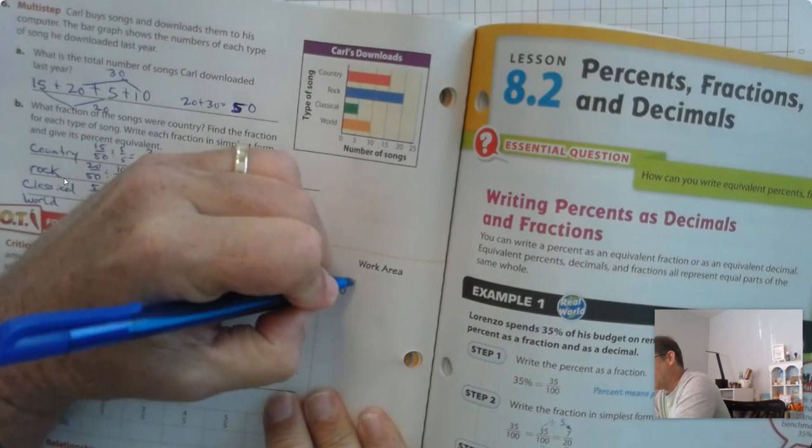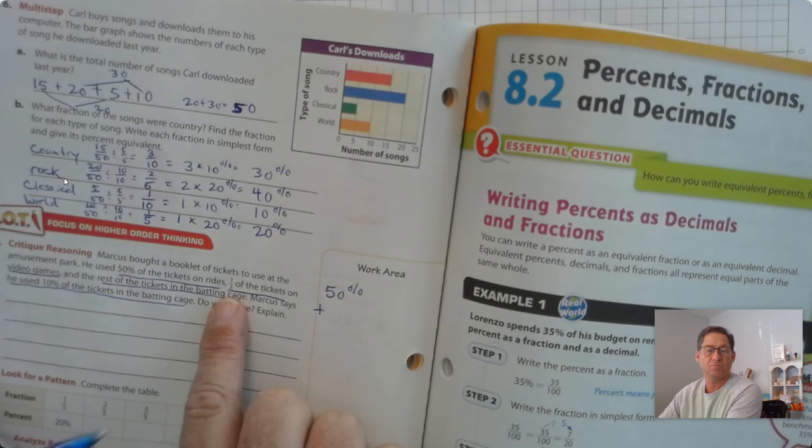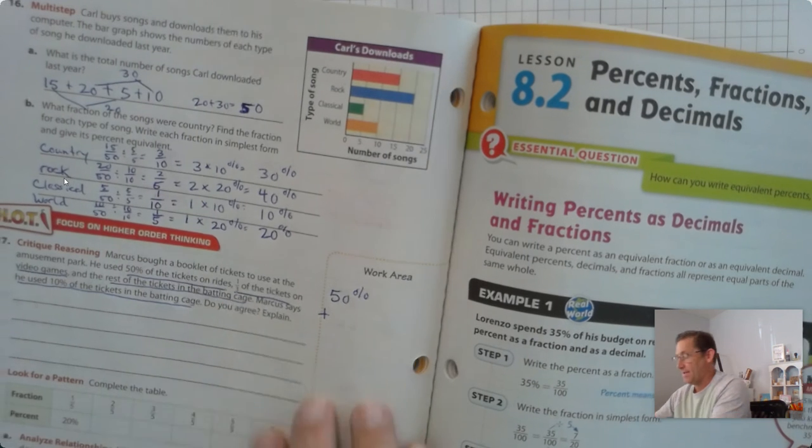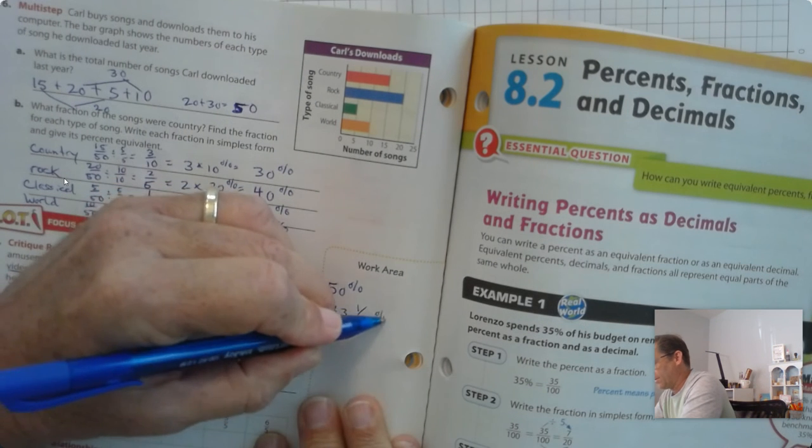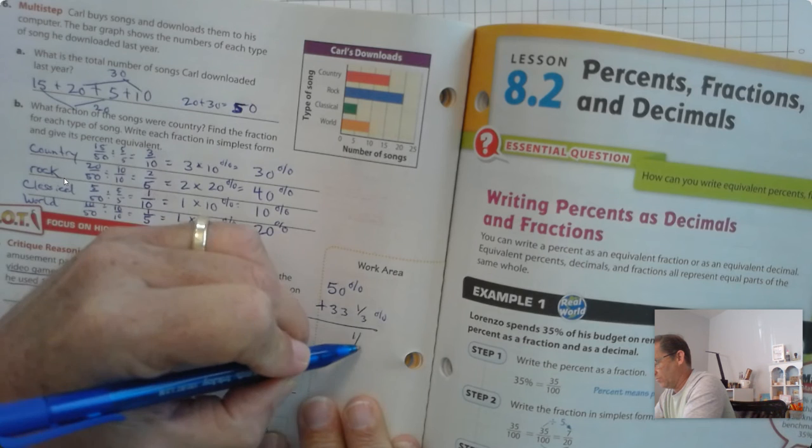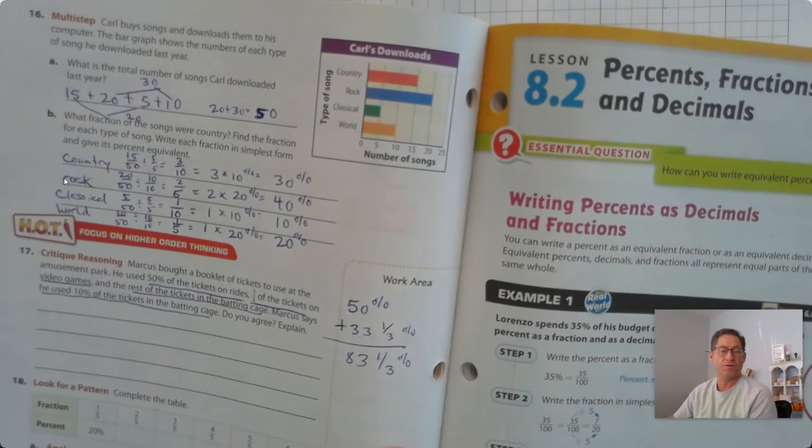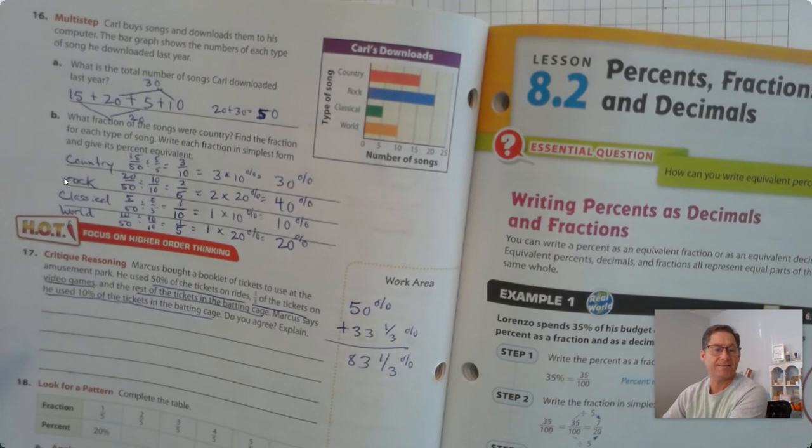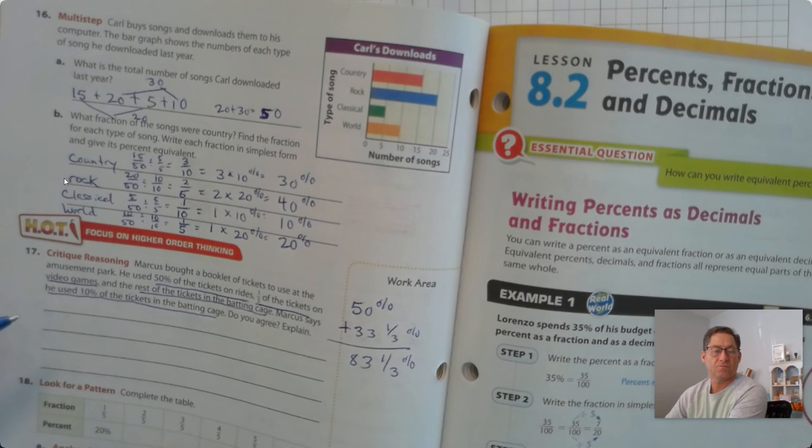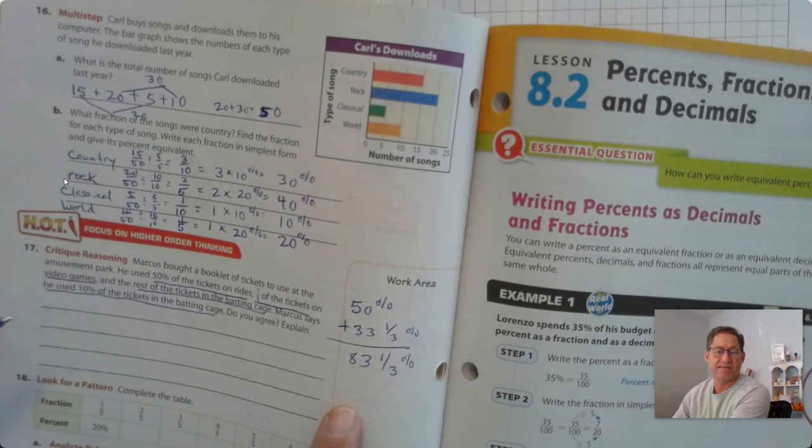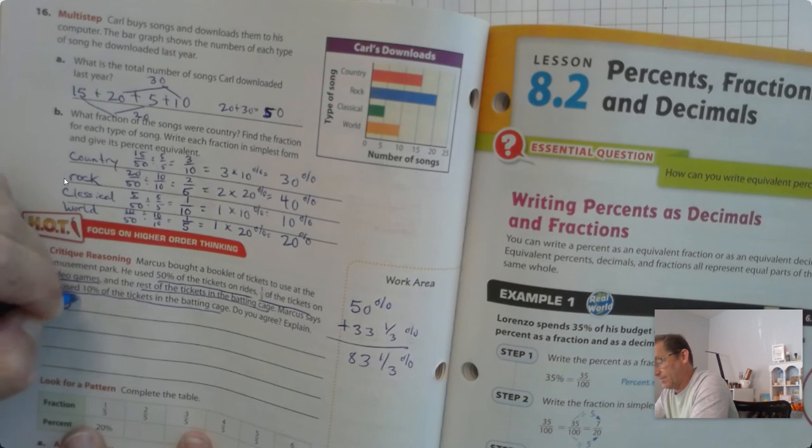50% plus one-third. One-third is a benchmark, and that's 33 and one-third percent. So, he used 83 and one-third percent of his tickets on rides and video games. Well, if I add 10% to that, that's only 93. So, no, I don't agree.